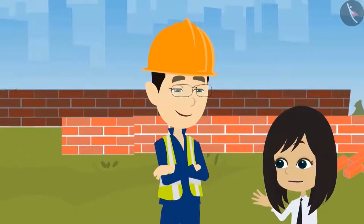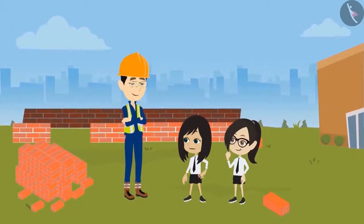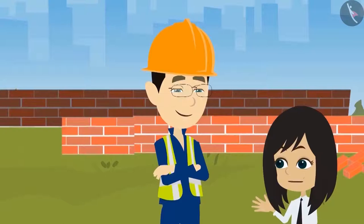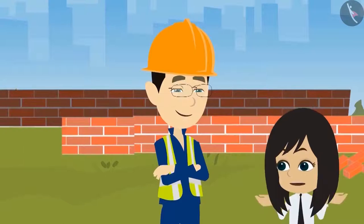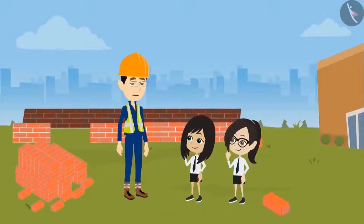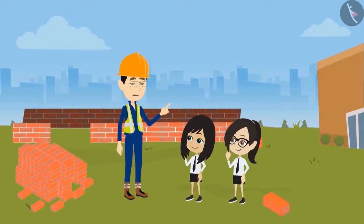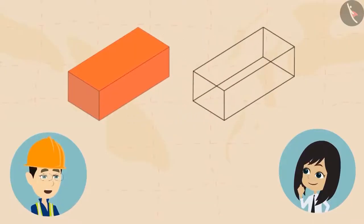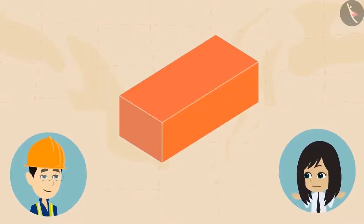Now we have understood. But here all the bricks are of the same shape. Are all bricks of the same rectangle shape? Yes, all bricks are of this shape — a rectangular box. In mathematics, this shape is called a cuboid.